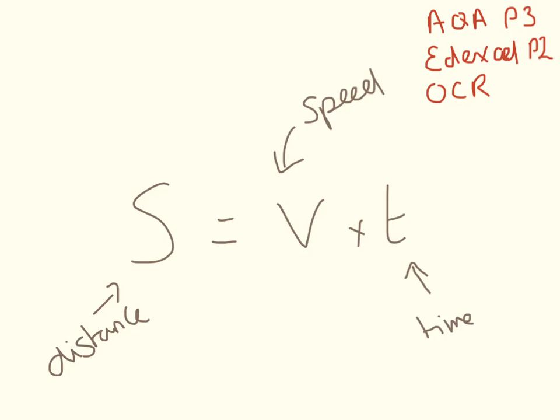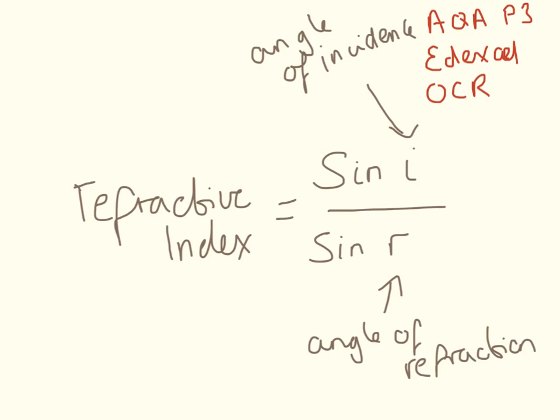Okay, moving on to the P3 formula sheet now. So we have distance in meters, speed in meters per second, and time in seconds. Okay, we don't need any units for refractive index, but the units for angles incidence are degrees, and so for the angle of refraction.